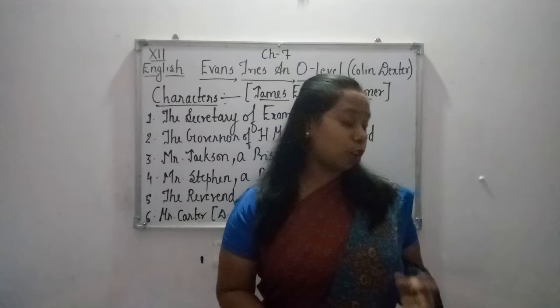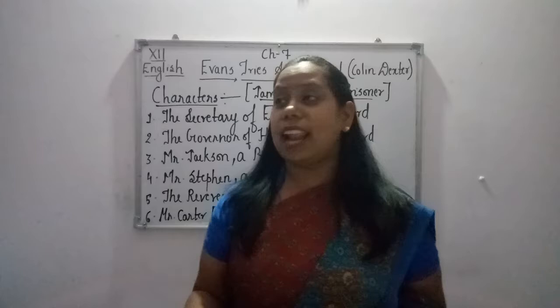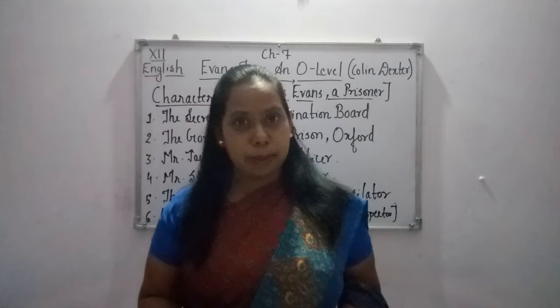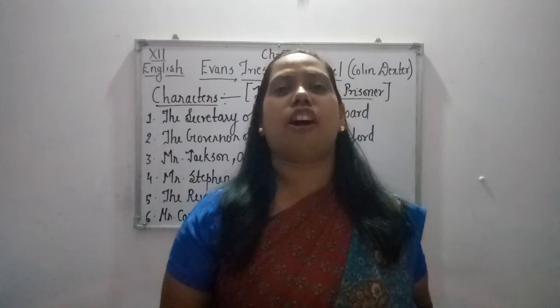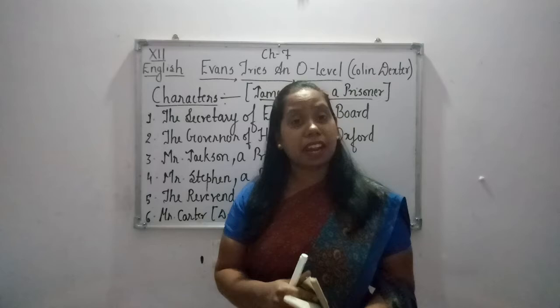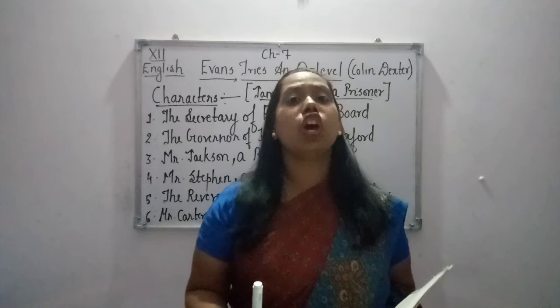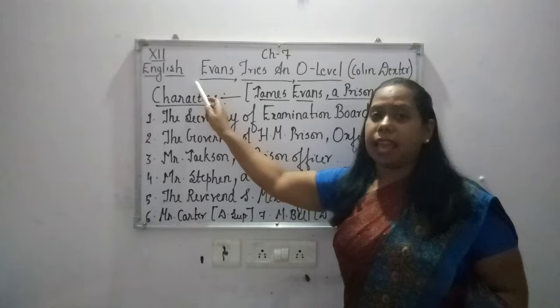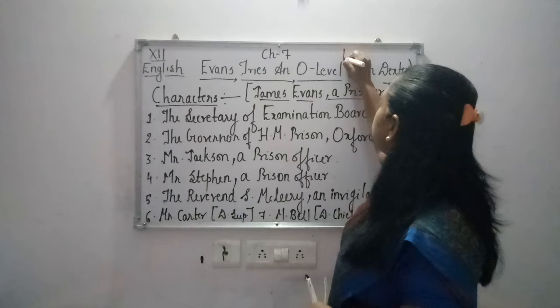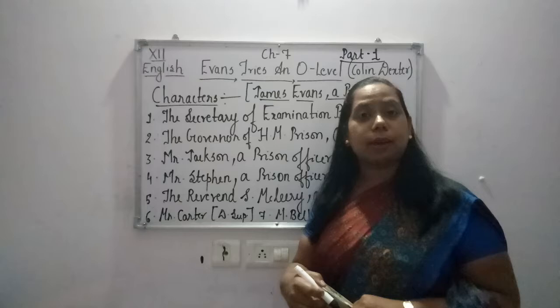We are doing Chapter Number 7 from Vistas, which is our supplementary reader. In our previous classes I already completed the book called Flamingo, which is our main reader, and all those chapters have been completed from a final examination point of view. There is one more chapter, 'Memories of Childhood,' but that has been deleted for this session. So 'Evans Tries an O-Level' is our Chapter Number 7 in Class 12 English, by Colin Dexter.